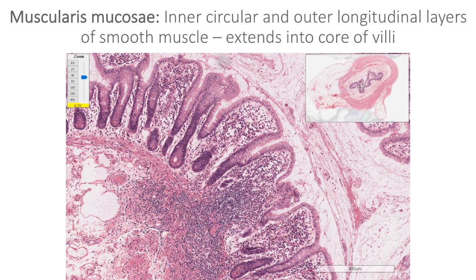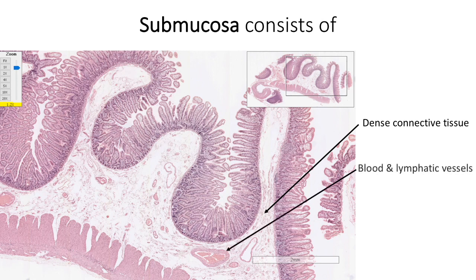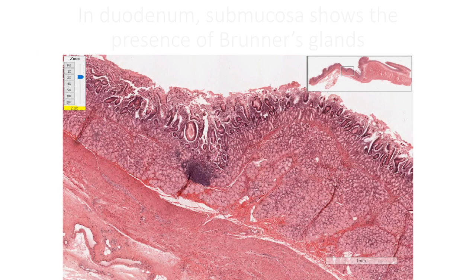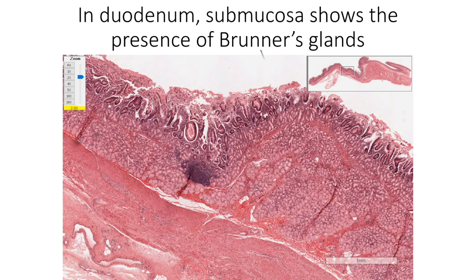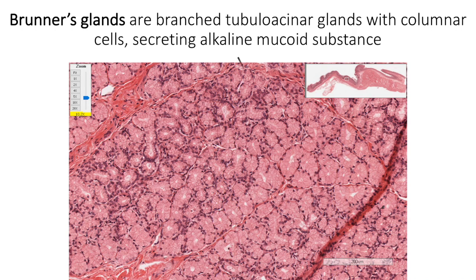Muscularis mucosae shows an inner circular and outer longitudinal layer of smooth muscle. These smooth muscles also extend into the core of the villus. The submucosa consists of dense connective tissue, blood and lymphatic vessels, and Meissner's plexus of nerves. In the duodenum, the submucosa shows its characteristic feature: the presence of Brunner's glands. Brunner's glands are tubuloacinar glands made of columnar cells that secrete an alkaline mucoid substance, which is required to neutralize the acidic chyme coming from the stomach.